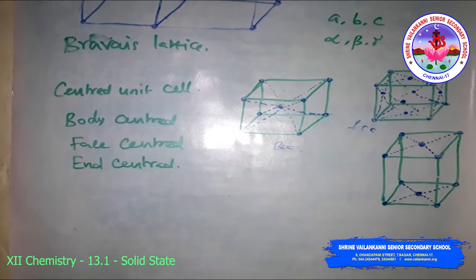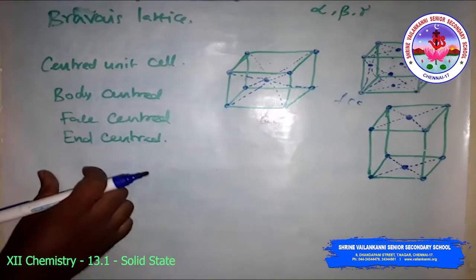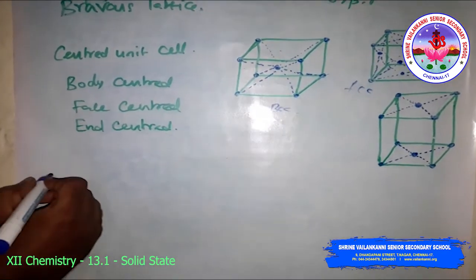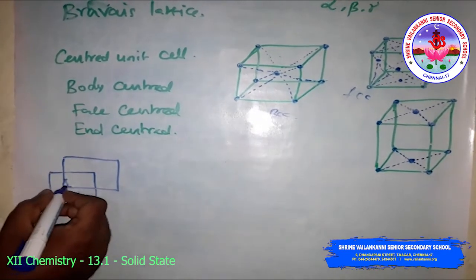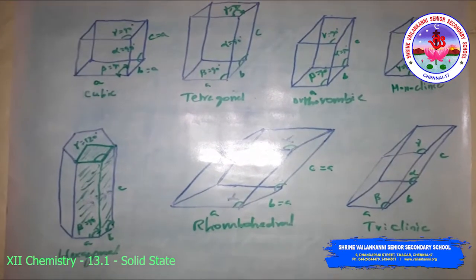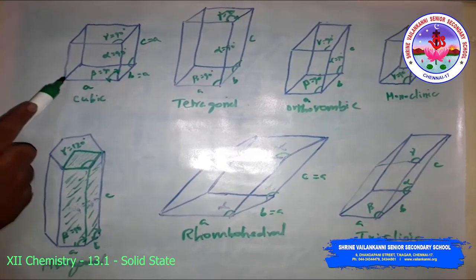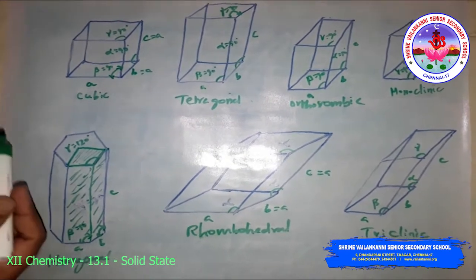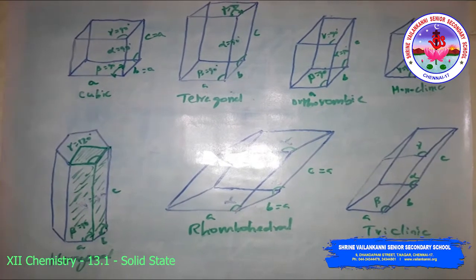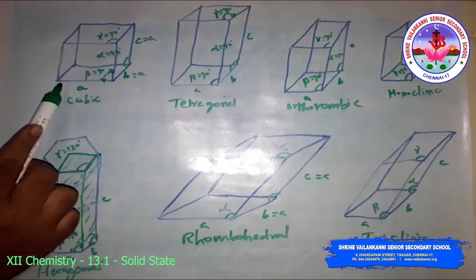There are seven types of primitive unit cells. You can refer to table 1.7 in your textbook, which lists the seven primitive unit cell crystal systems and their 14 Bravais lattice variations, including diagrams of the 3D arrangements.